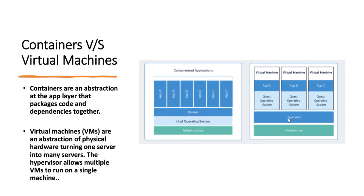With virtual machines, we end up under-utilizing resources — for example, a VM might need 8 GB of RAM, but the application running on it doesn't utilize all of that RAM or CPU, so we waste resources. With containers, we can specify exactly what the app needs, like 1 GB RAM and 1 CPU core. Setting up a container is quite easy compared to a virtual machine. Containers are an abstraction at the app layer that package code and dependencies together.